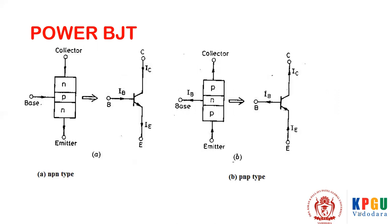These are the symbols of a PNP and NPN transistor. Commonly, a Power BJT is used as a switch only; it is not used in the active region. When it is used as a switch, common emitter configuration is generally used. This figure indicates the PNP and NPN structure and its symbol. Its three terminals are known as collector, base, and emitter.